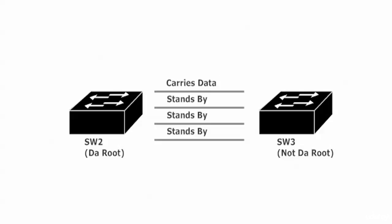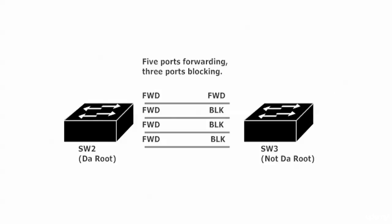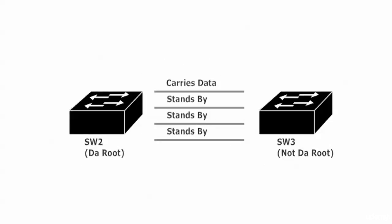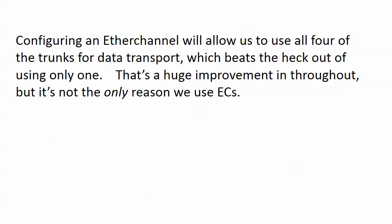The issue right now is that only the first trunk — where both ends are forwarding — is actually carrying data. The other three are standing by. We love the redundancy, but wouldn't it be great to combine them all and use them at one time? When we configure an EtherChannel we can use all four trunks for data transport.